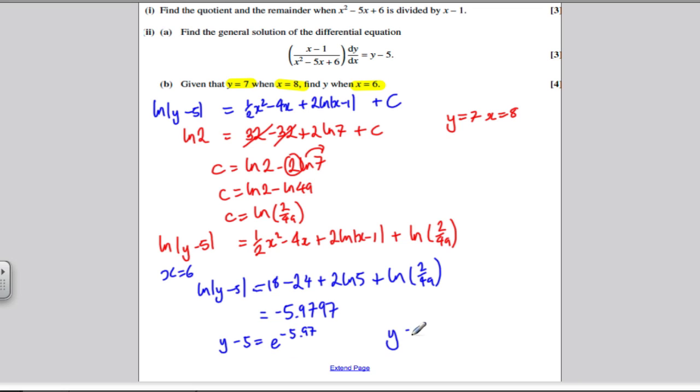So y minus 5 is e to this number 5.97 onwards. And so y is 5 plus e to the minus 5.97 dot, dot, dot. Keeping that number fully in your calculator. And we get ourselves that y is about equal to 5 rounded to the nearest whole number.